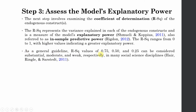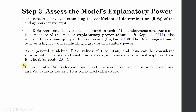As a general guideline, R-square values of 0.75, 0.50, or 0.25 can be considered as substantial, moderate, and weak respectively in many social science disciplines. But acceptable R-square values are based on research context, and in some disciplines an R-square value as low as 0.10 — that is 10% variance in the endogenous construct — is considered satisfactory.